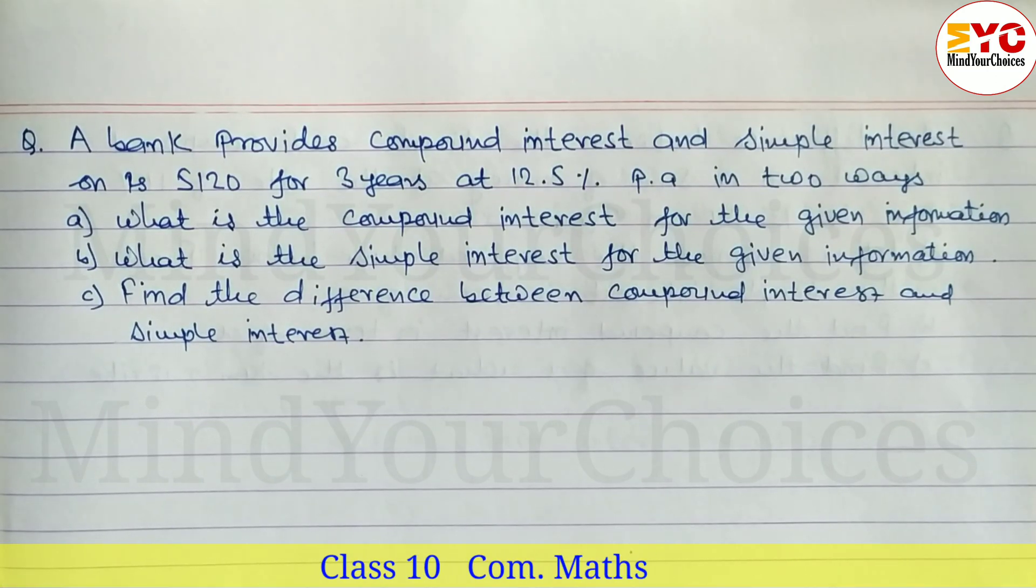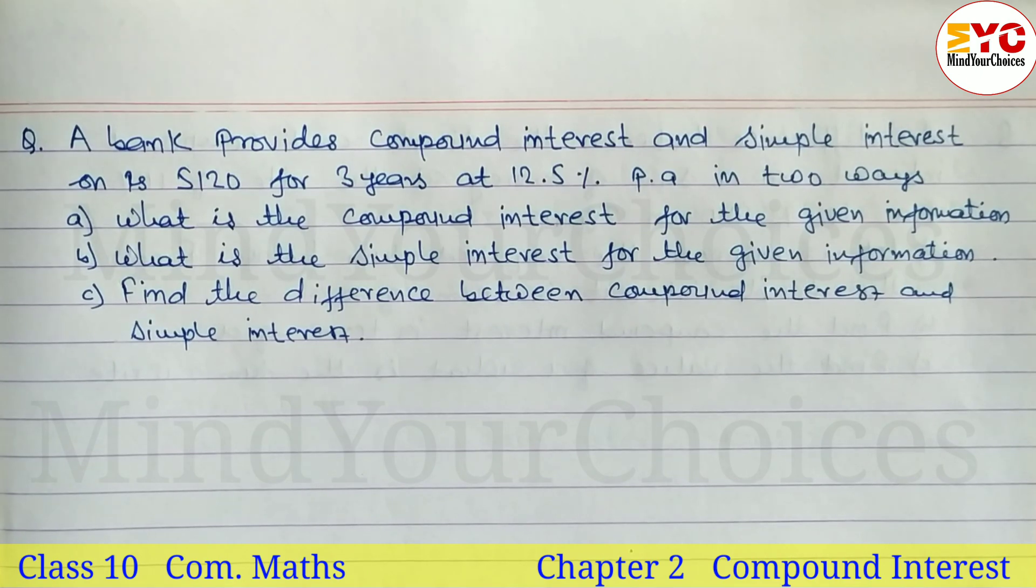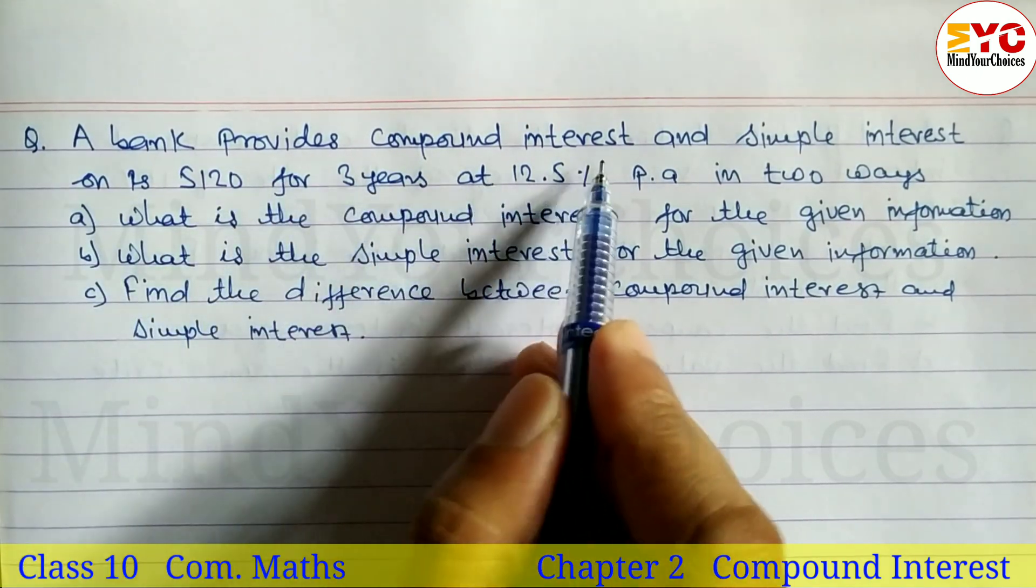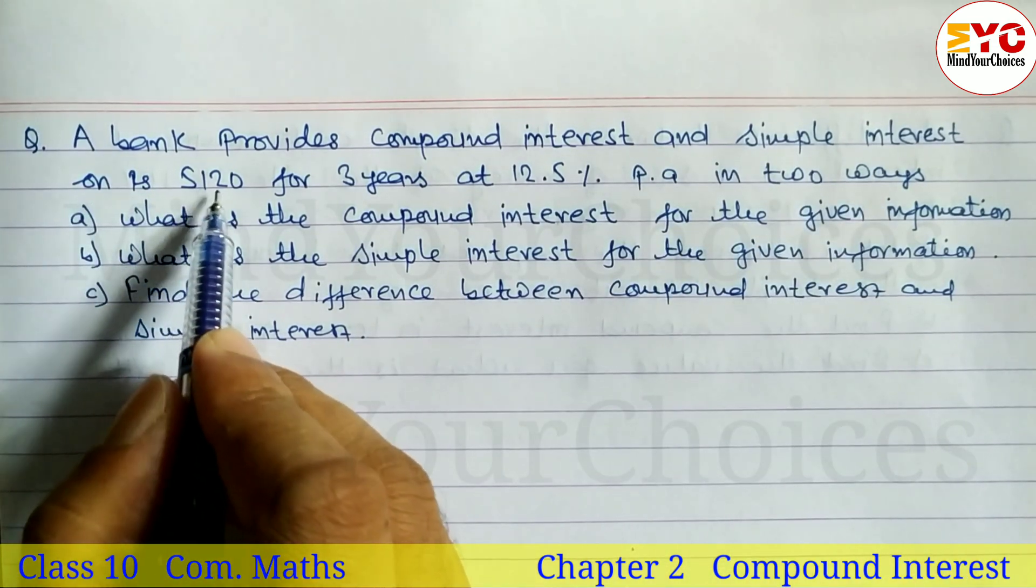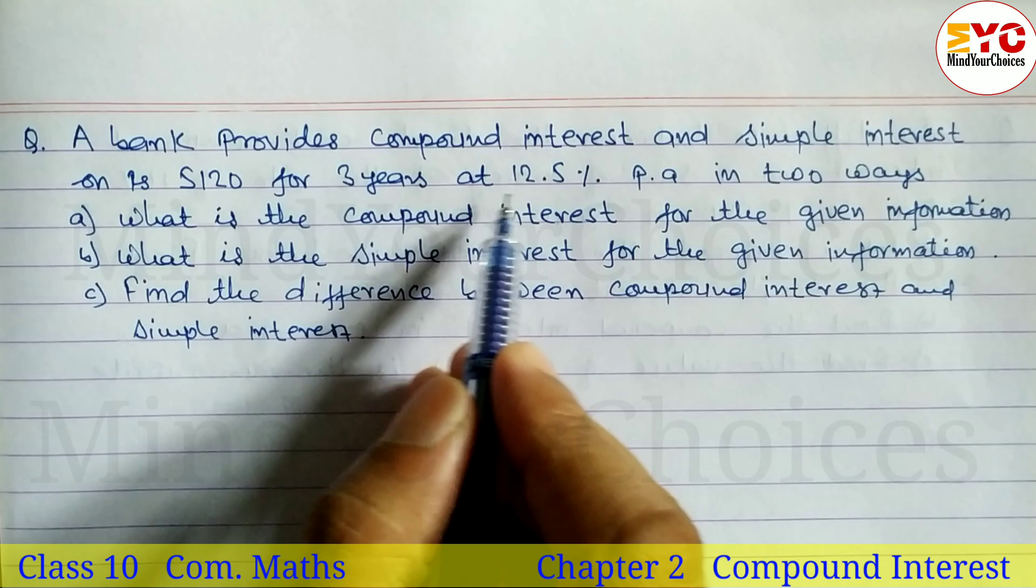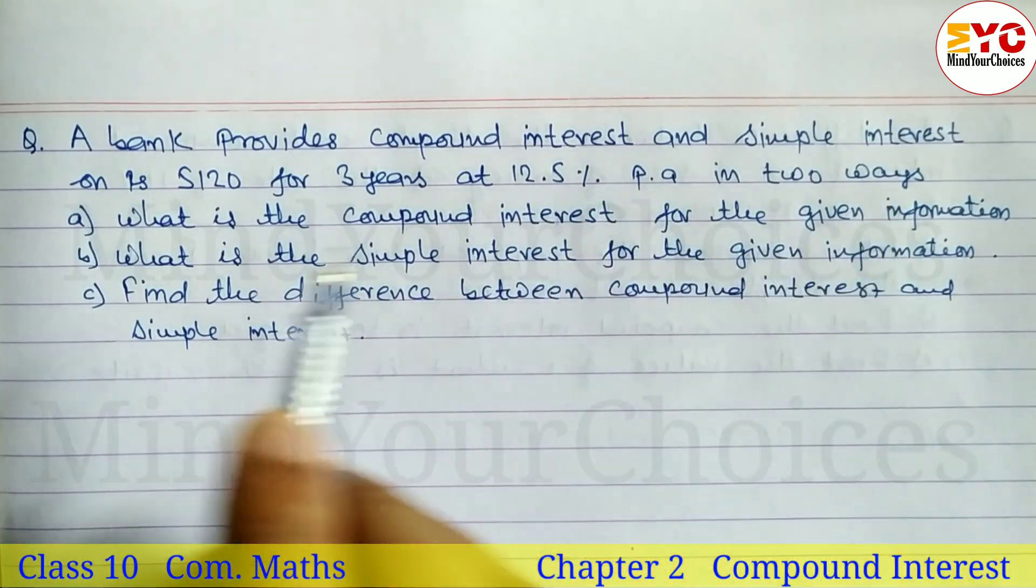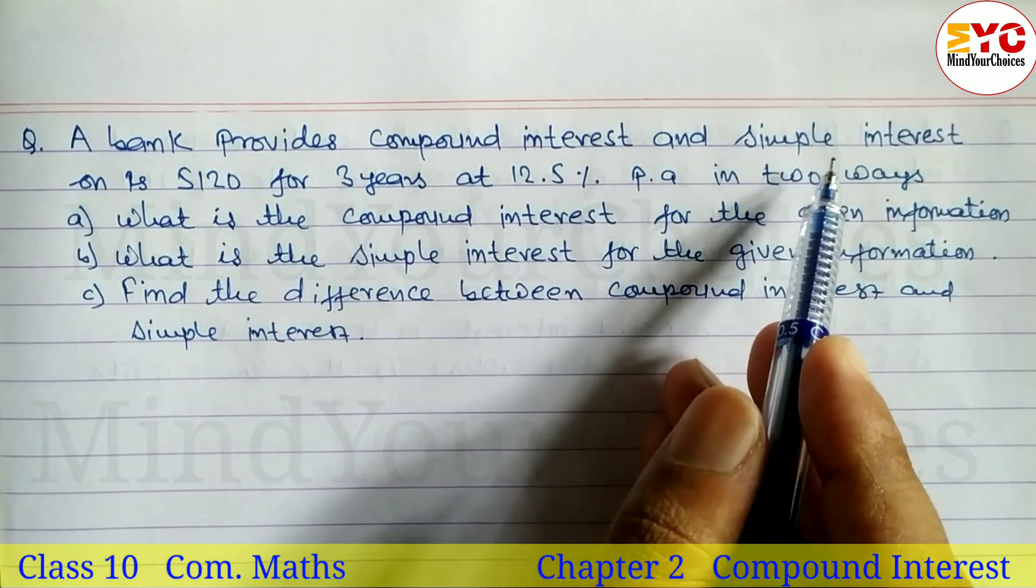This is question 8 from class 10 compound interest, chapter 2. A bank provides compound interest and simple interest on Rs. 5,120 for 3 years at 12.5% p.a. in two ways.